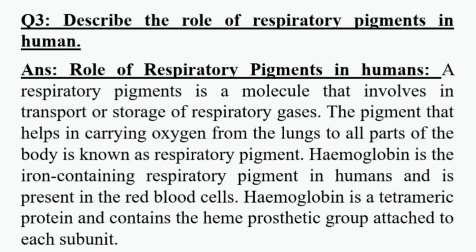Question number 3: Describe the role of respiratory pigments in humans. Answer: A respiratory pigment is a molecule that involves in transport or storage of respiratory gases. The pigment that helps in carrying oxygen from the lungs to all parts of the body is known as respiratory pigment. Hemoglobin is the iron-containing respiratory pigment in humans and is present in the red blood cells. Hemoglobin is a tetrameric protein and contains the heme prosthetic group attached to each subunit.